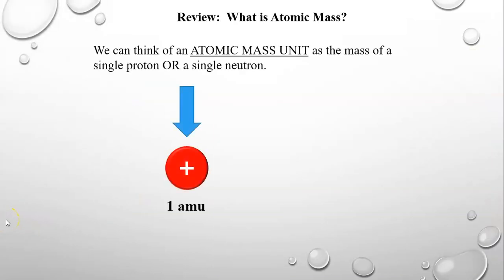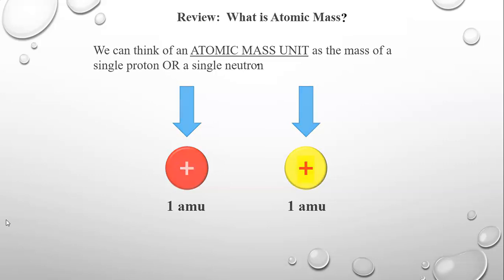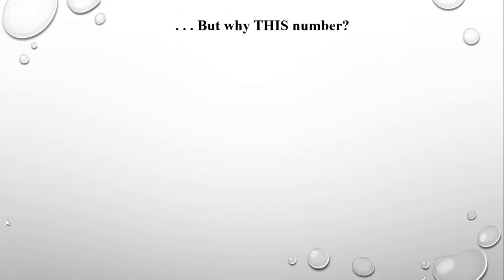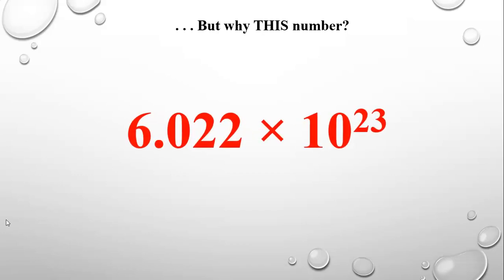We can think of an atomic mass unit as the mass of a single proton or a single neutron. That's what we define an atomic mass unit as in this class. But why this number? Why 6.022 times 10 to the 23rd and not some other really big number? And why a big number at all?